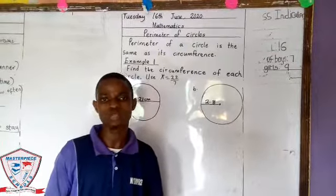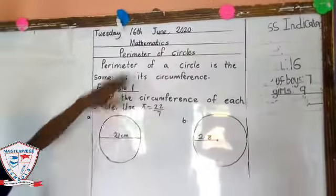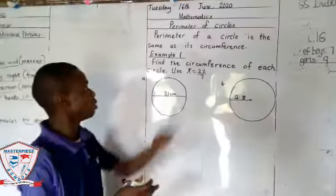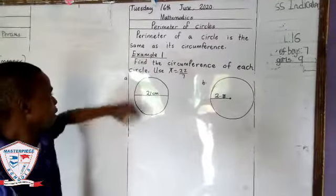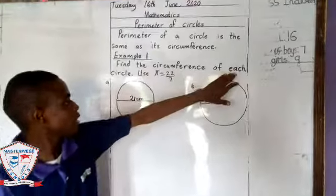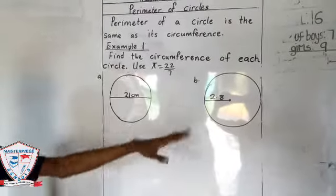Welcome back to class. Today, Tuesday 16th June 2020, we have mathematics. As you know, we're continuing with the perimeter of circles. Now, example 1: we have to find the circumference of each of these circles.